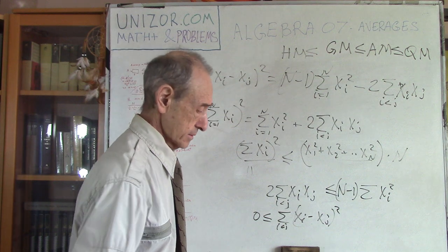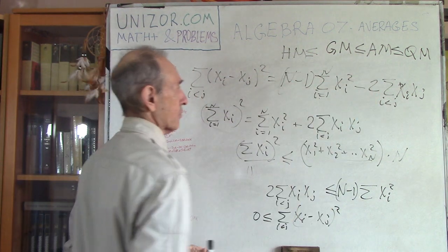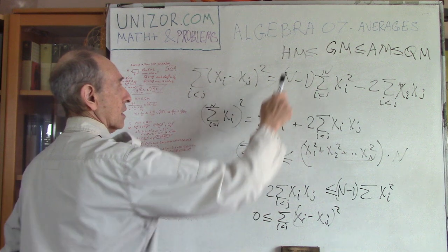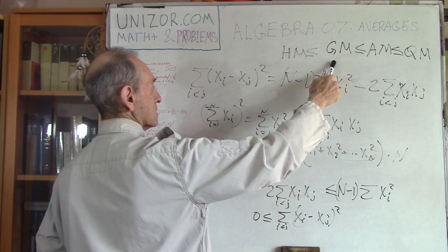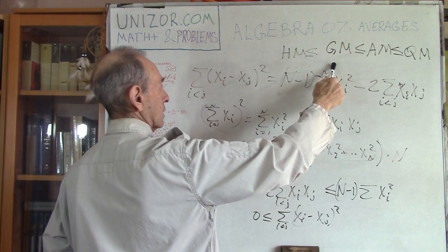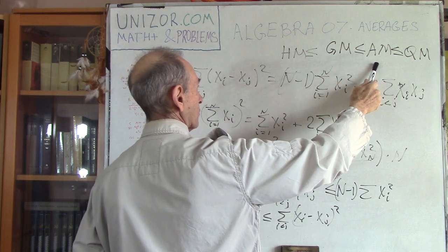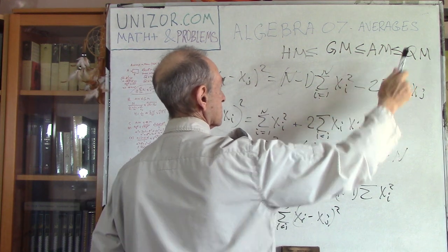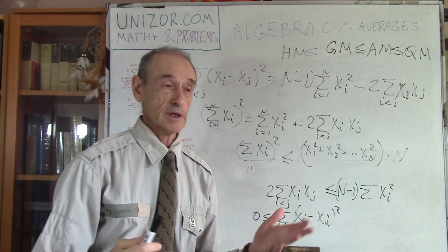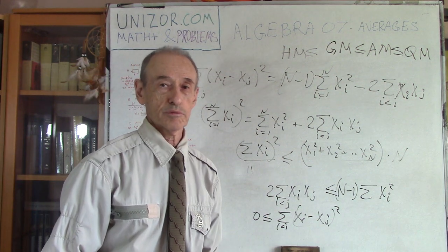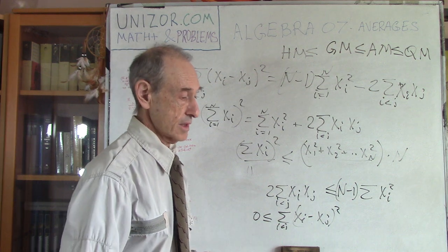So that's the summary: harmonic mean ≤ geometric mean ≤ arithmetic mean ≤ quadratic mean. That's it for today.